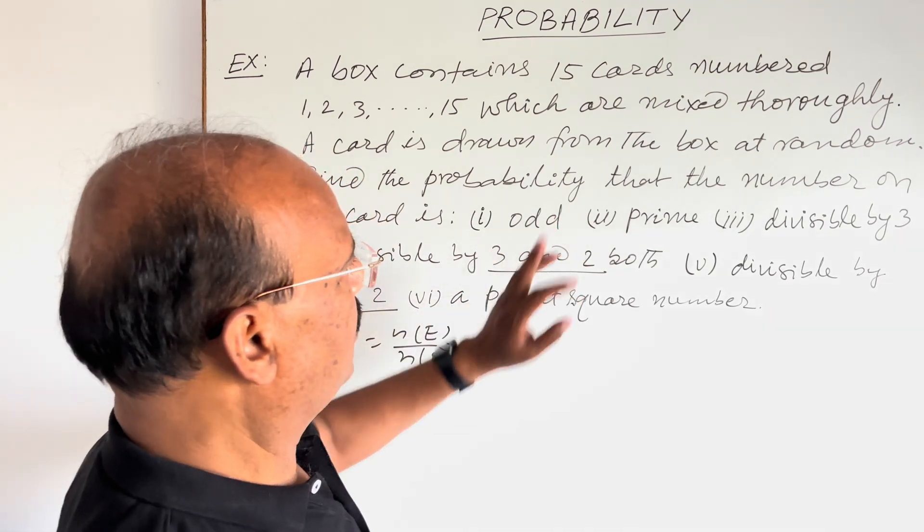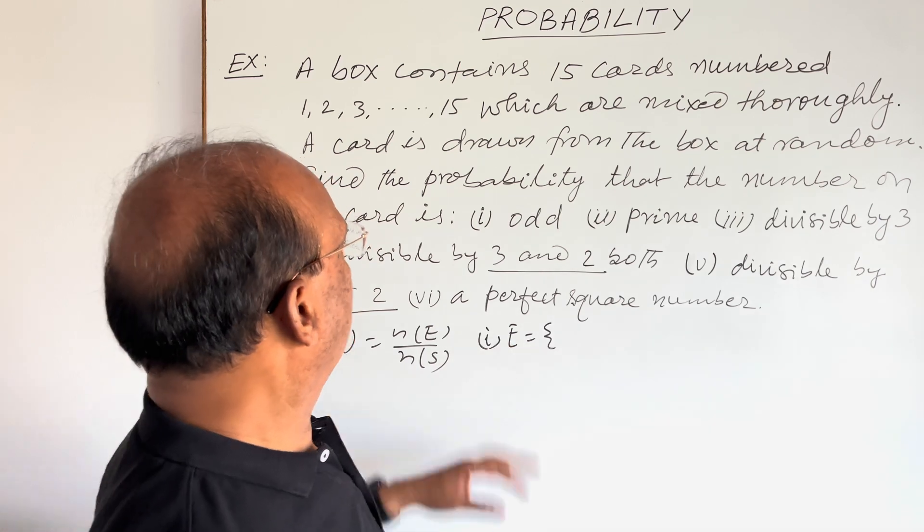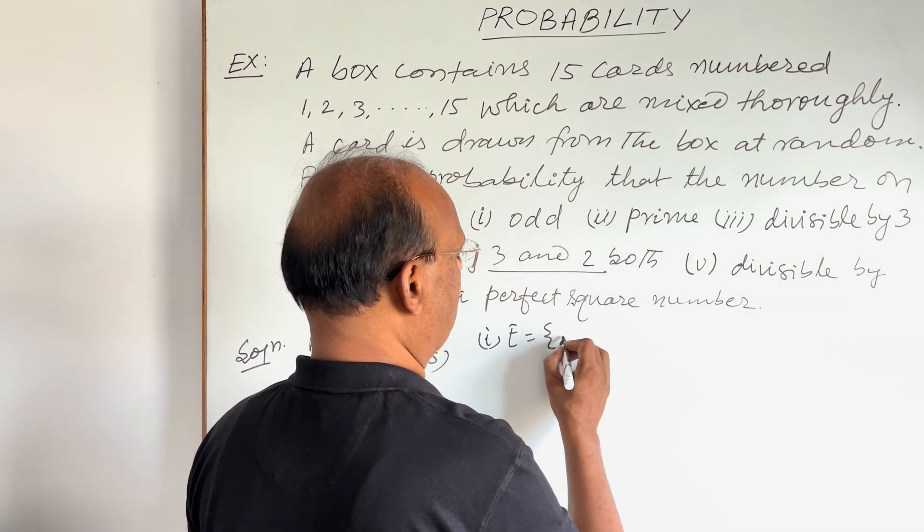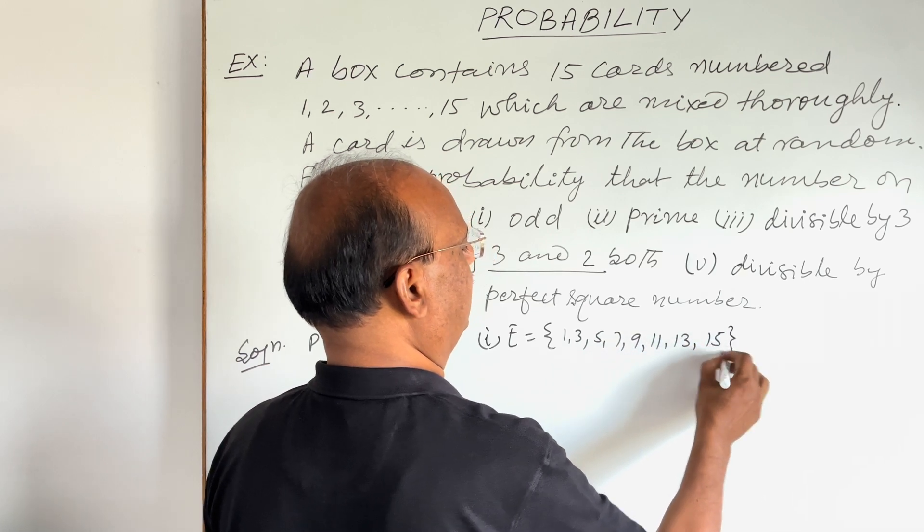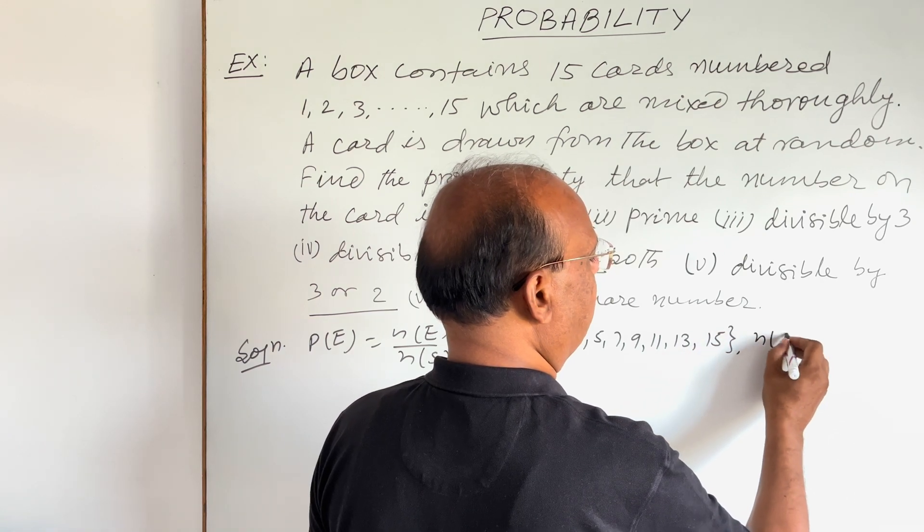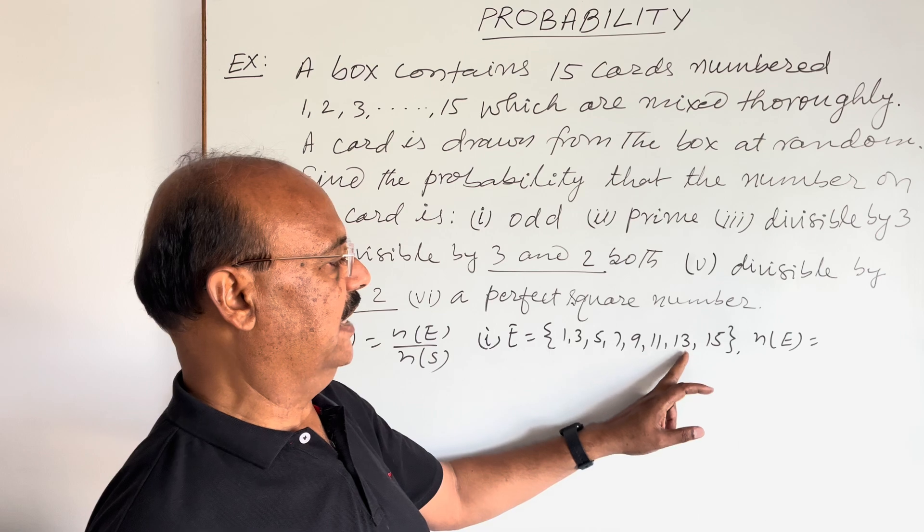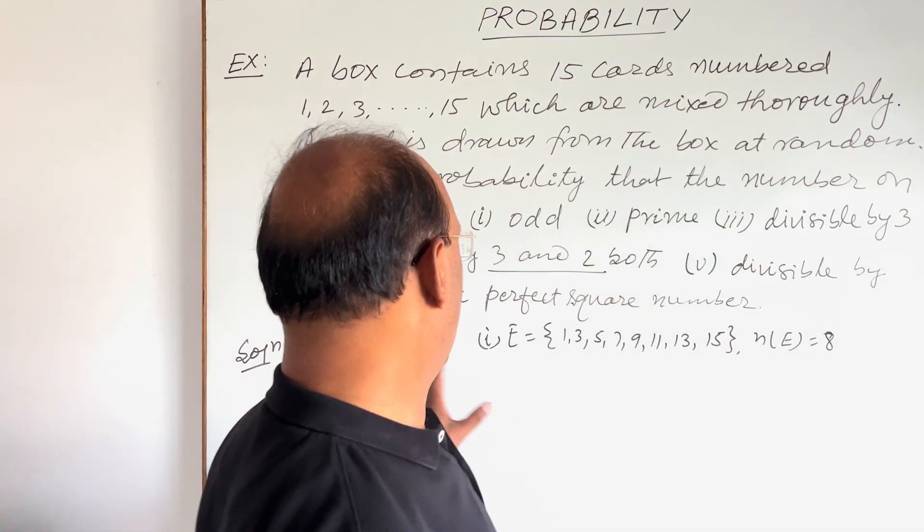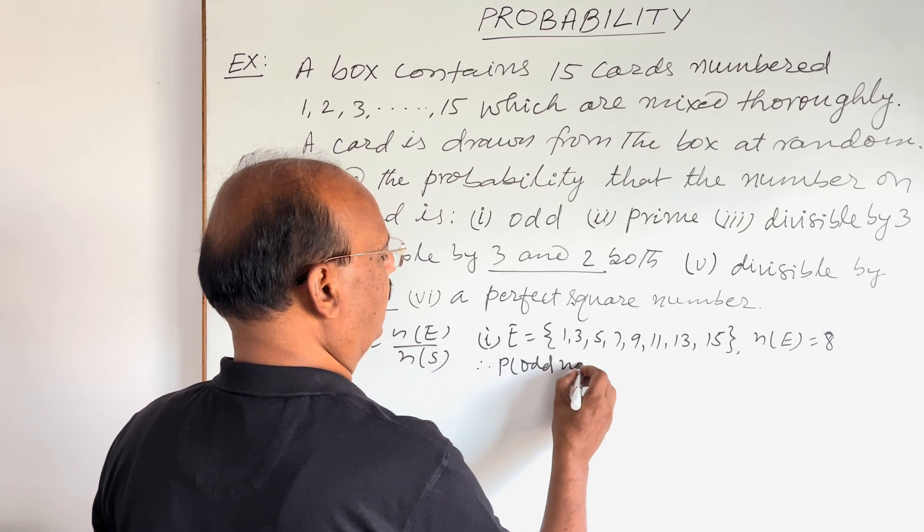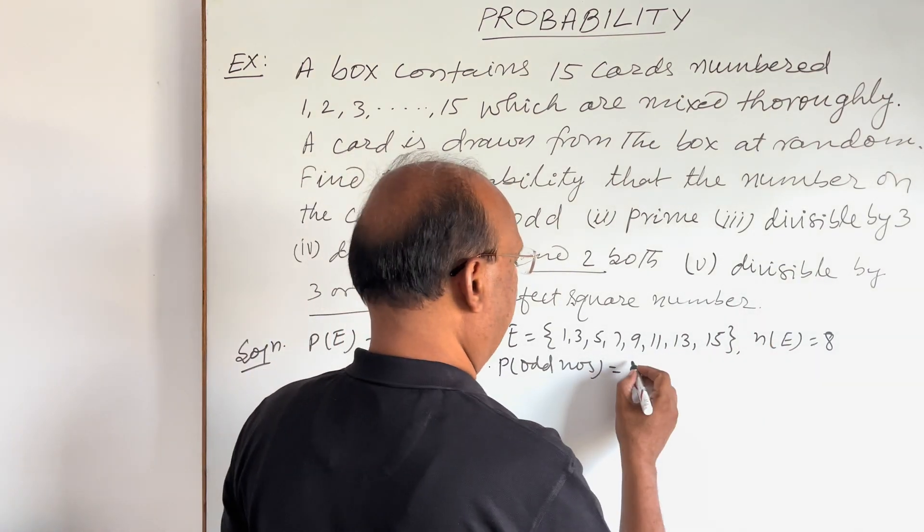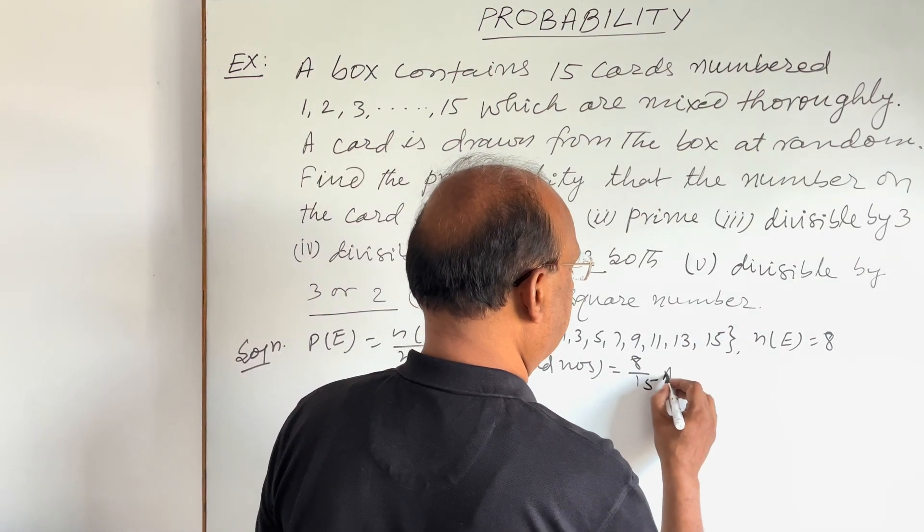First part, odd numbers. So first of all, we will collect all odd numbers that will make event E. Numbers are from 1 to 15. So numbers are 1, 3, 5, 7, 9, 11, 13 and 15. So total number of elements here will give us 1, 2, 3, 4, 5, 6, 7, 8. And n(E) is 8 here. So by using this formula, we can find out this probability. Therefore, probability of being odd numbers is equal to n(E) by n(S). So n(E) is 8 and n(S) is 15. This is the answer of the first part.